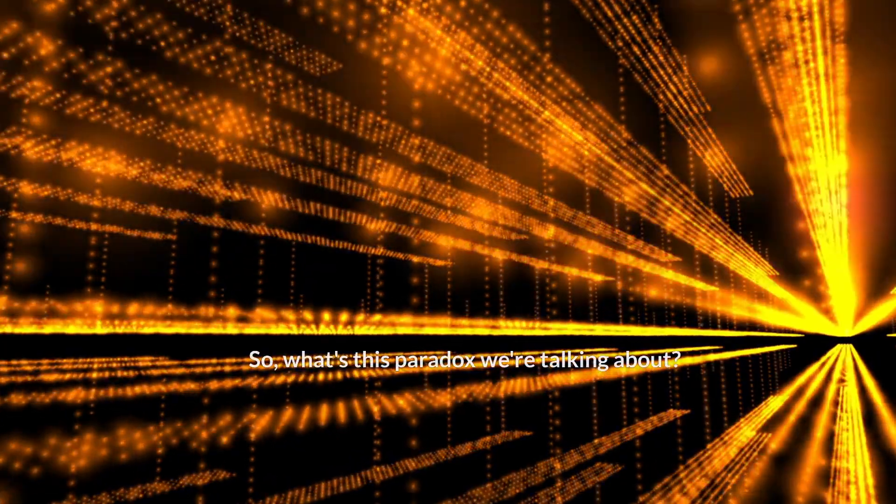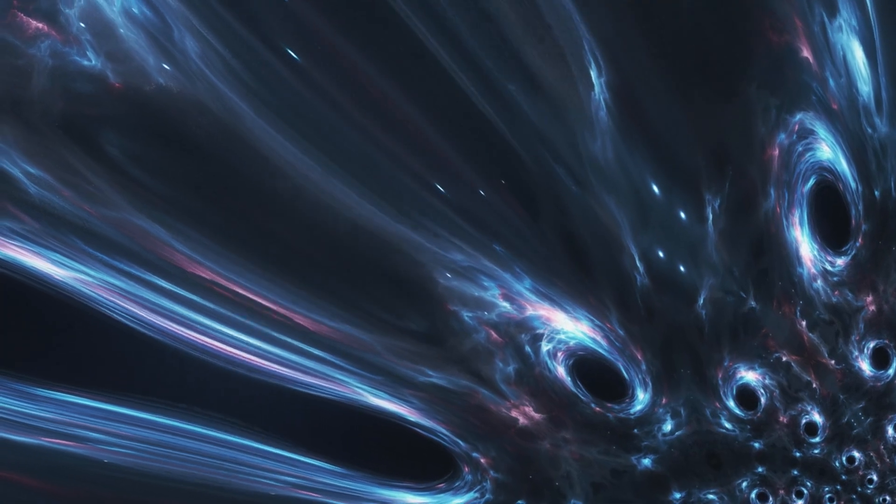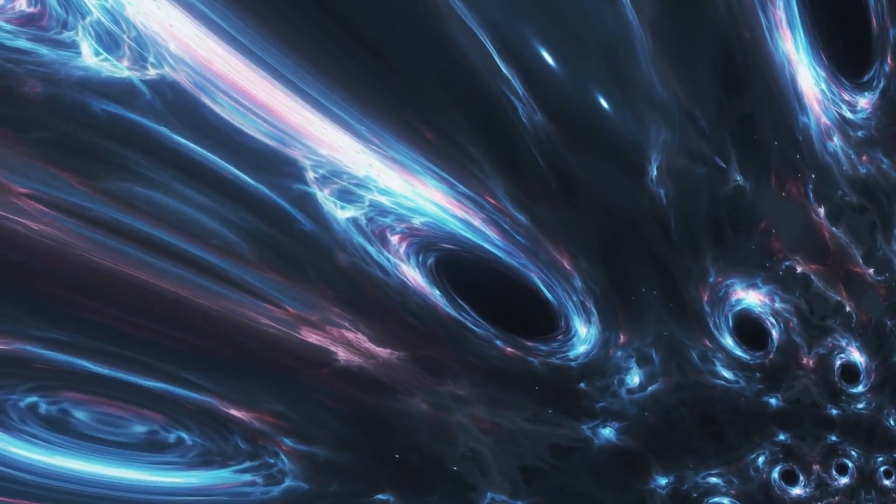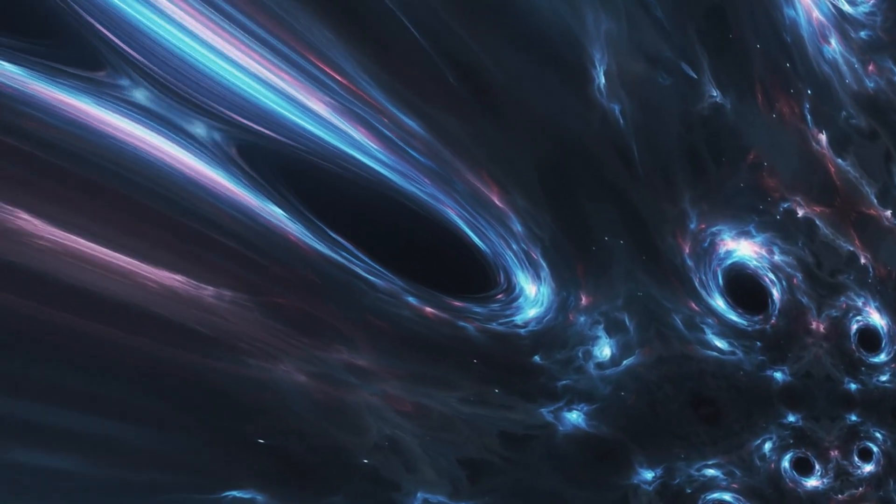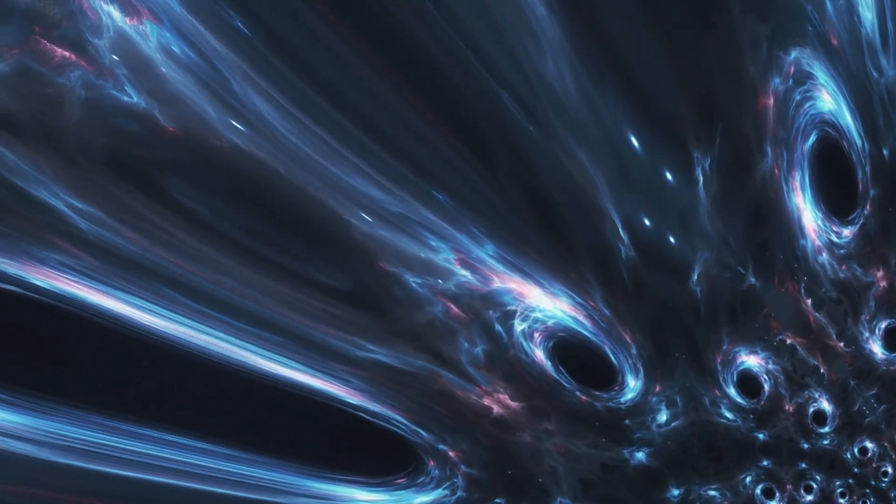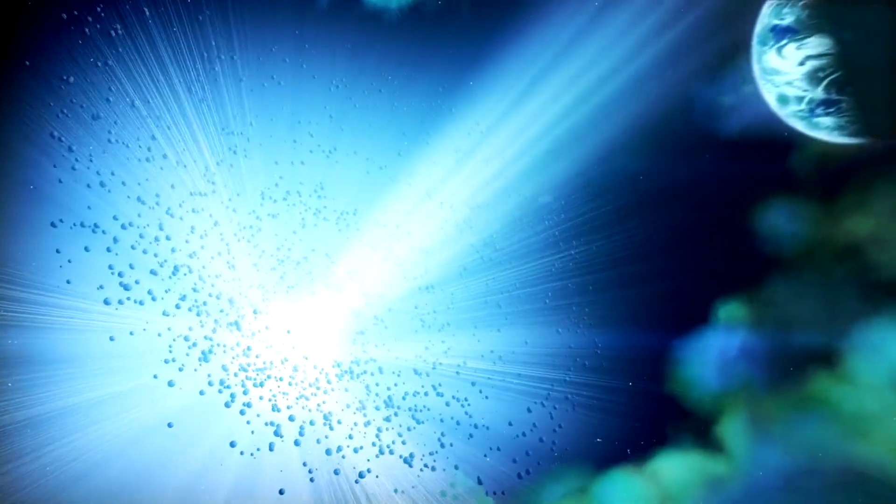So what's this paradox we're talking about? Well, it's simple and complex at the same time. You see, singularities like those at the heart of black holes or at the very beginning of the universe represent points where our understanding of physics, our rules for how the universe operates, just break down. They're like the universe's unruly children, refusing to play by the rules.